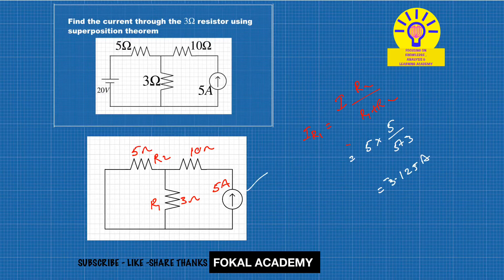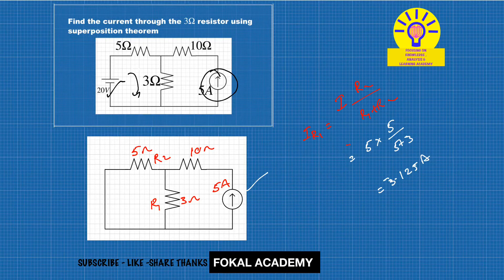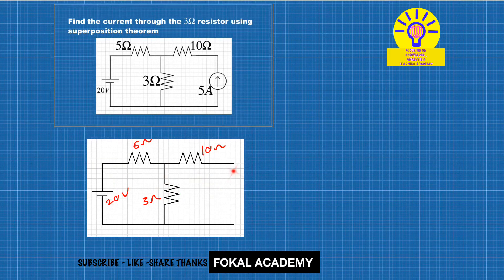Now find how much current flows through the 3-ohm resistor due to the 20-volt source. For that, open-circuit the current source. After redrawing the circuit, the current source is open-circuited, so that element is inactive and no current flows through it.